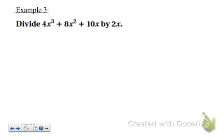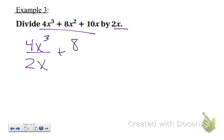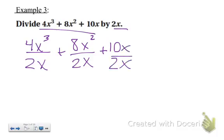Okay, example 3. You're still dividing a polynomial by a monomial. So just go through each one and divide by 2x. And you're left with 2x squared plus 4x plus 5.